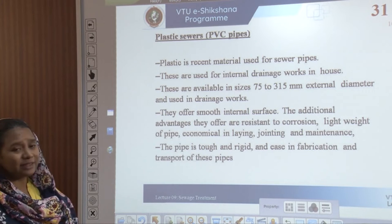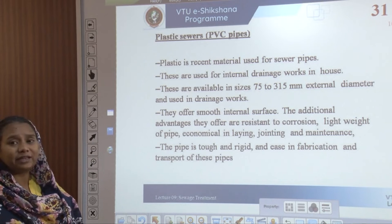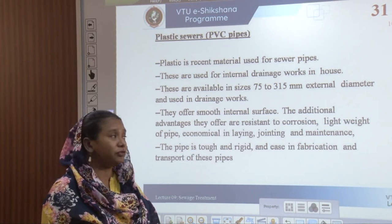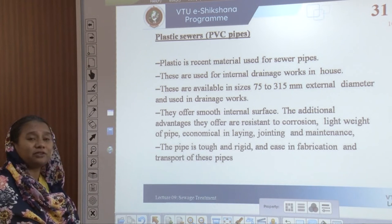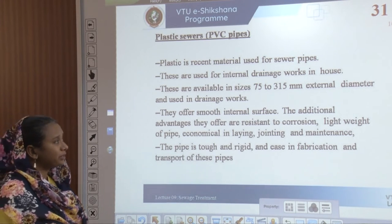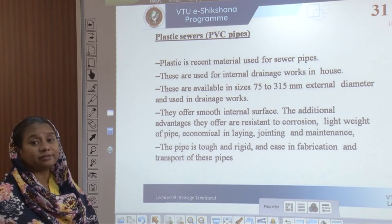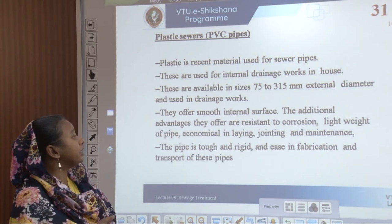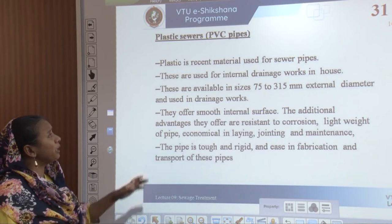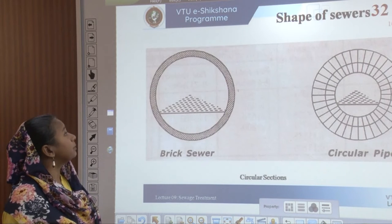Plastic sewers are a recent material used for sewer pipes, primarily for internal drainage works at homes. They are available in various sizes from 75 mm to 315 mm external diameter. They offer a smooth internal surface and additional advantages including resistance to corrosion, lightweight, economical with respect to maintenance, jointing, and laying. These pipes are tough and rigid, and easy to fabricate and transport.